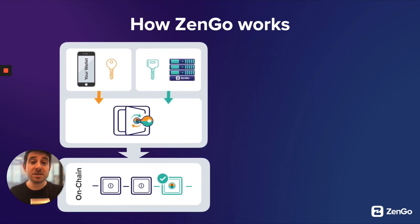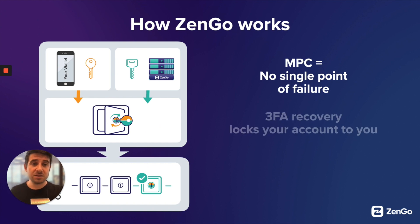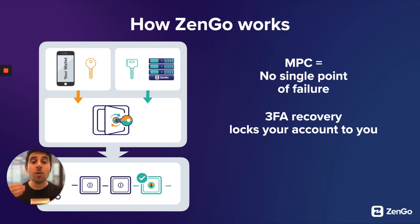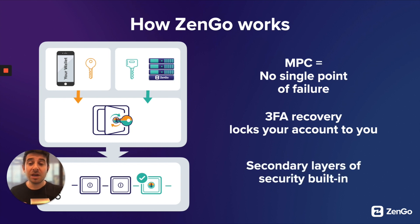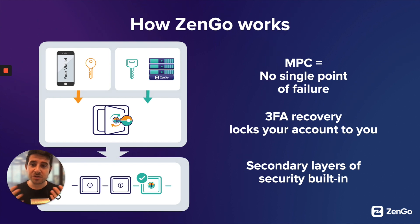With no single point of failure, there's a recovery process that locks your Zengo wallet to you, making it very difficult for someone else to steal your funds. And because these two secret shares work together, we can build in secondary layers of security — sort of like account abstraction on steroids for those of you who've been following that technology.